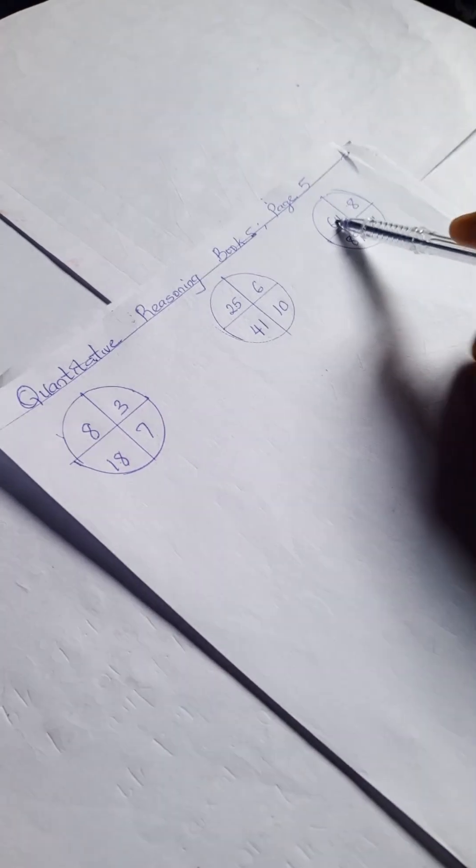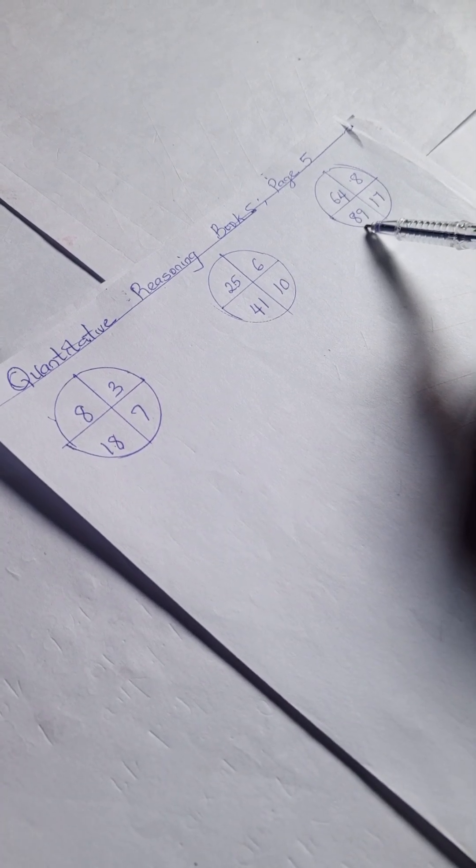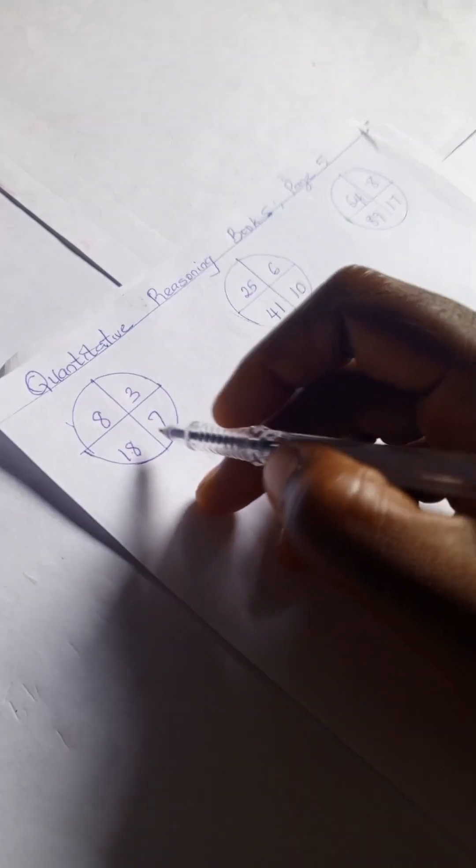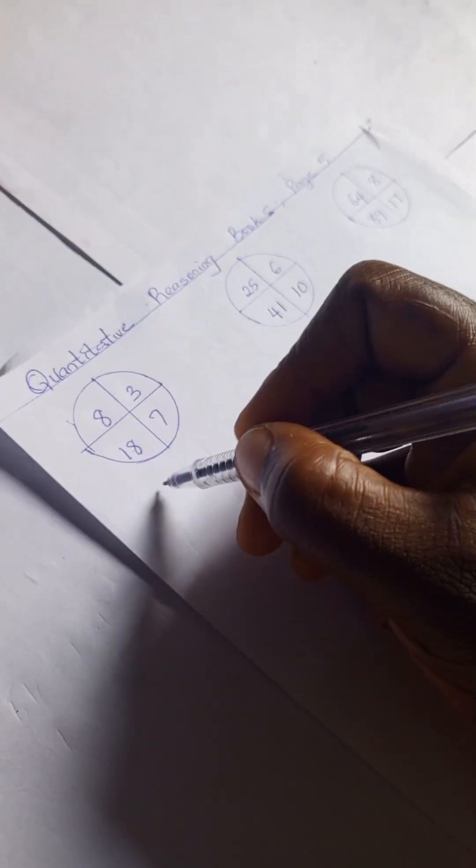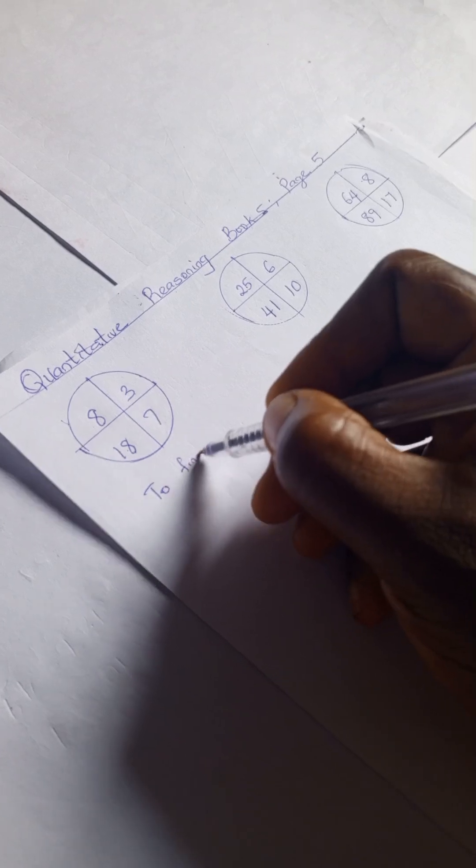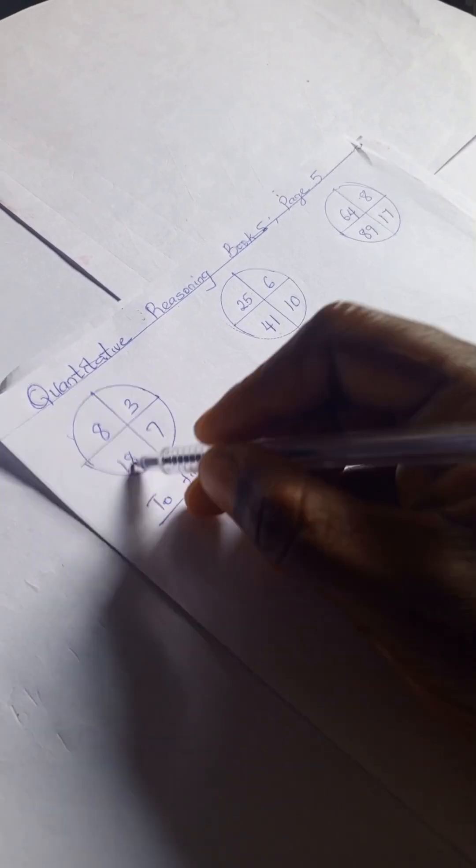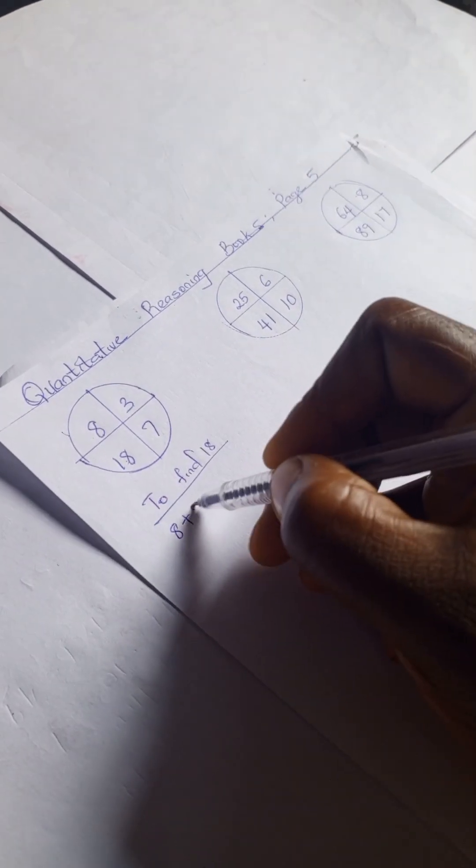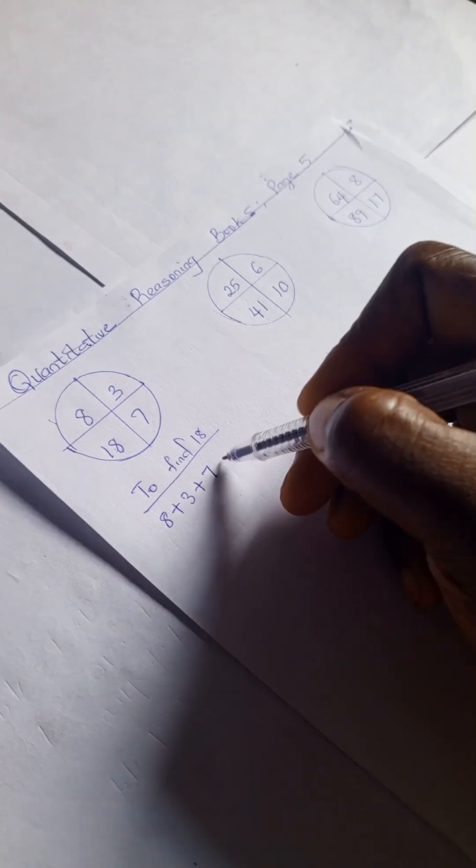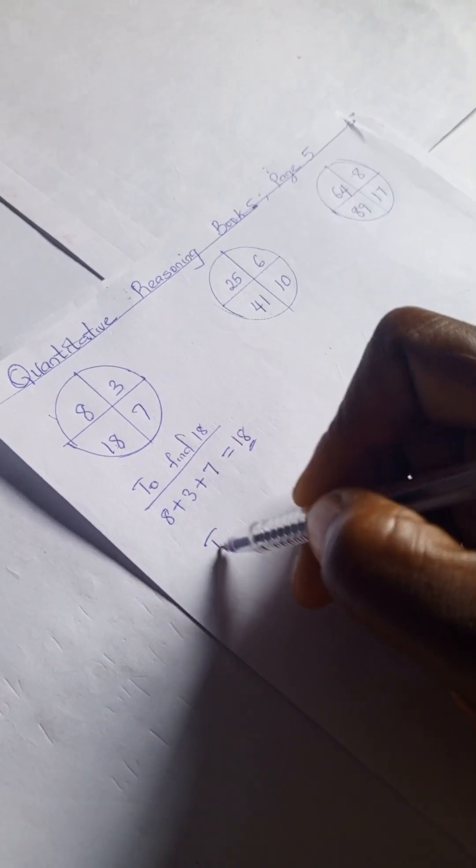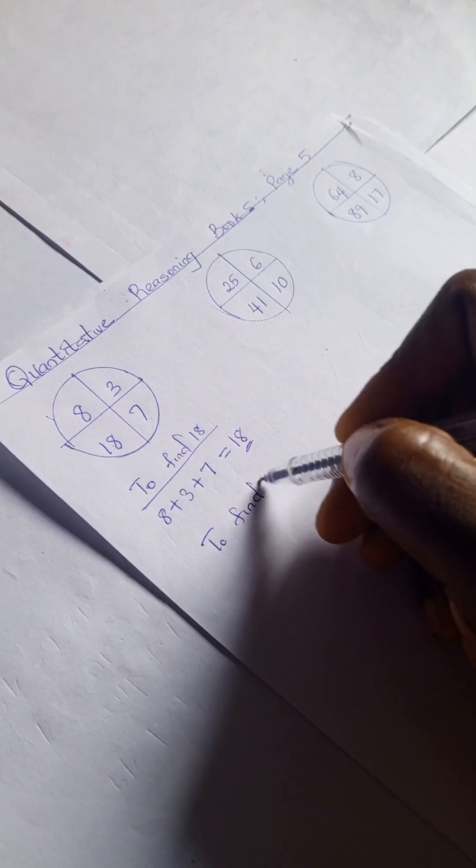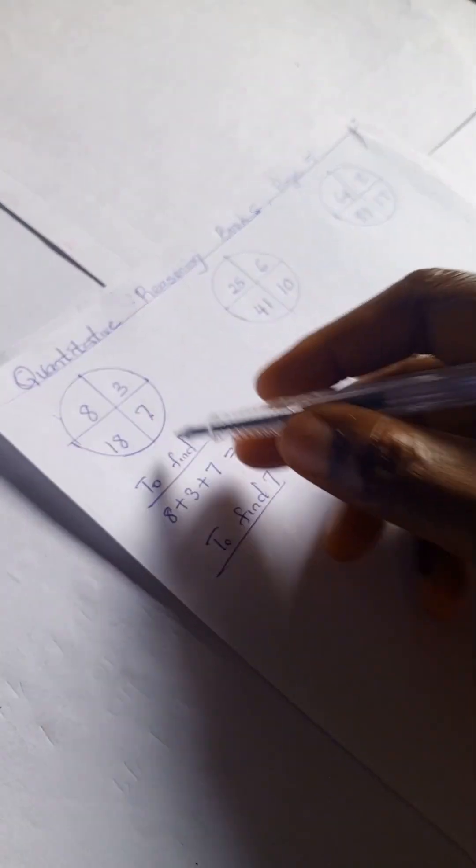Here we have 64, 8, 89, and 17. We're going to work on this. So to find 18 here, we're going to have 8 plus 3 plus 7, and that gives us 18. To find 7, there's 7.